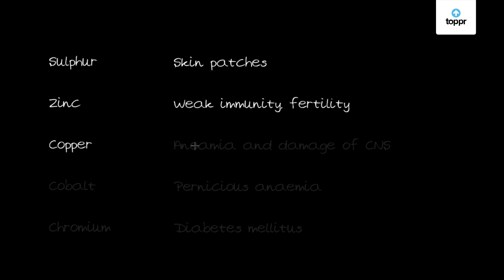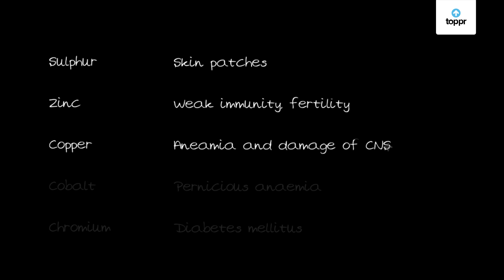Next is copper. Copper is a component of the enzyme required for melanin synthesis and is also essential for the synthesis of hemoglobin. The deficiency of copper causes anemia and damage to the central nervous system.